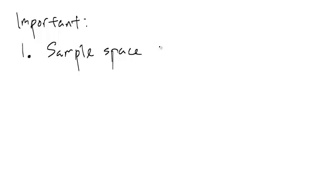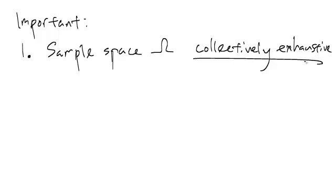Just a few important notes. The first thing is that the sample space is what's called collectively exhaustive. What this means is that every possible outcome is in omega.